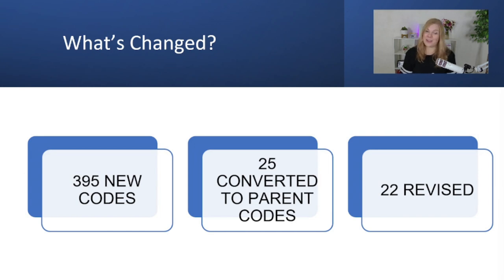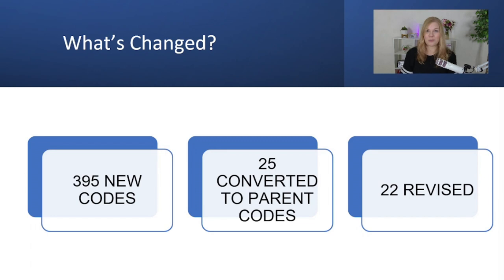Last year we actually saw 1,176 new codes, 251 deleted, and 36 converted to parent. So compared to last year, these changes aren't as significant. Thankfully, I'm here to not give an hour-long presentation on this — I'm going to give some clarity on the revisions but I'm not going to make you brain-dead going through all of the updates.